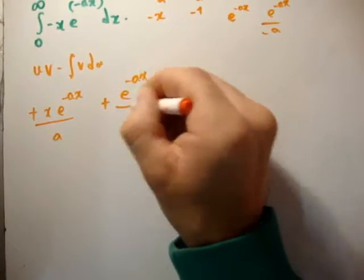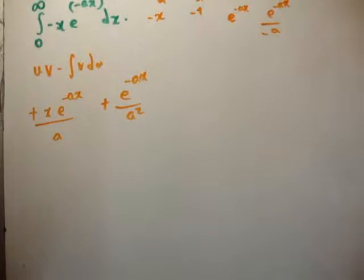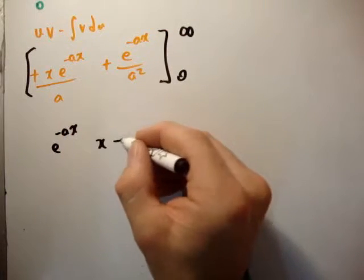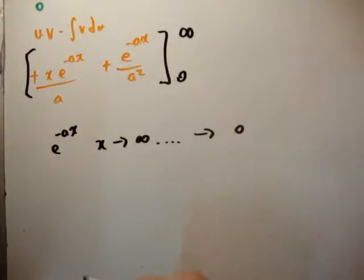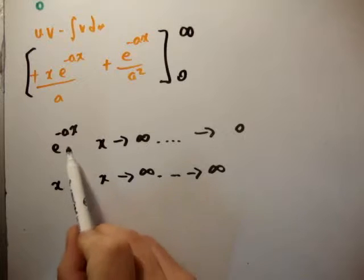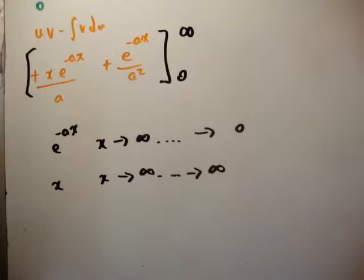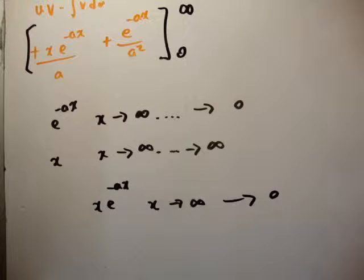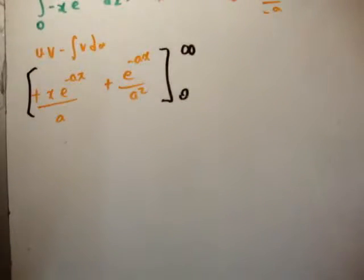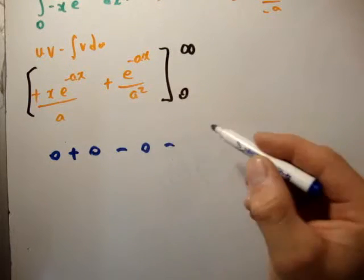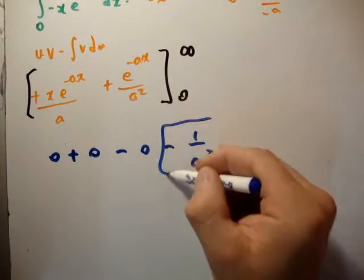The next term gives plus e to the minus ax over a squared. We're evaluating the whole lot between 0 and infinity. A very important point is that e to the minus ax, as x goes to infinity, goes to 0 very quickly. Although x goes to infinity, e to the minus ax goes to 0 quicker than x goes to infinity, so the product x times e to the minus ax goes to 0. That means the uv term goes to 0 at infinity, and plugging in the limits gives 0 plus 0, then minus 1 over a squared. So the integral equals minus 1 over a squared.